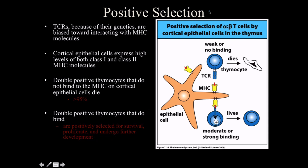So what are we doing in positive selection? We just want to make sure that we have T cells that are going to interact with and bind to MHCs. We want to make sure that they can identify and interact with the MHC. We don't really care about the peptide in those MHCs yet — we just want to make sure the T cells can interact with the MHCs.